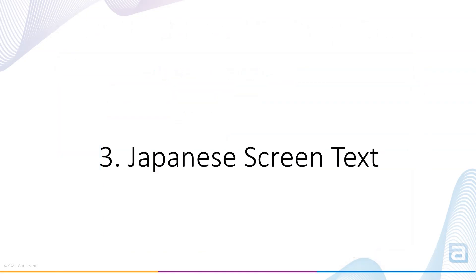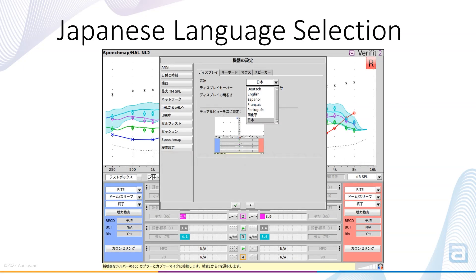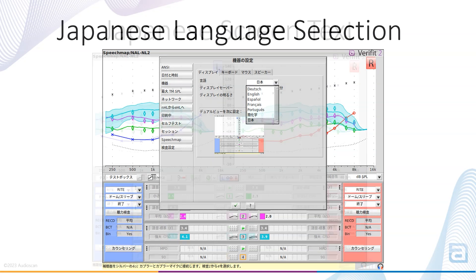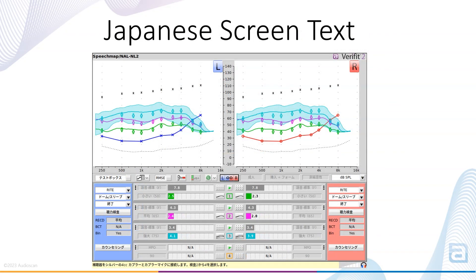We've continued to expand our multi-language support through the addition of Japanese screen text to Verifit 2 and Axiom. Selecting Setup and then Devices allows the selection of screen language. English, German, Spanish, French, Portuguese, simplified Chinese, and now Japanese are available on the Verifit 2 and Axiom. This provides clinicians the comfort of using the Audioscan in their native language. Selecting a new language will require restarting; upon rebooting, all relevant screen text is translated.